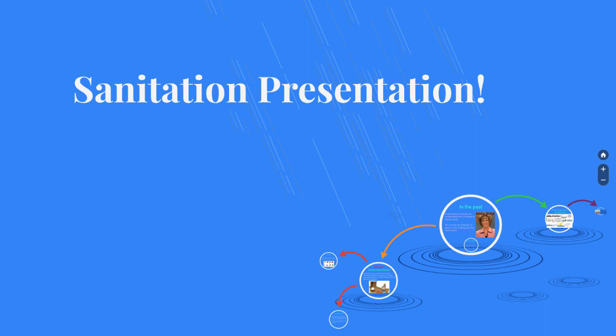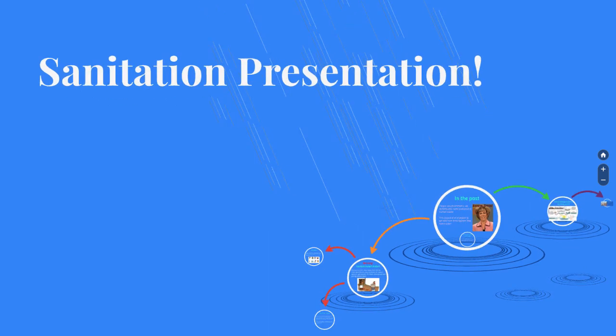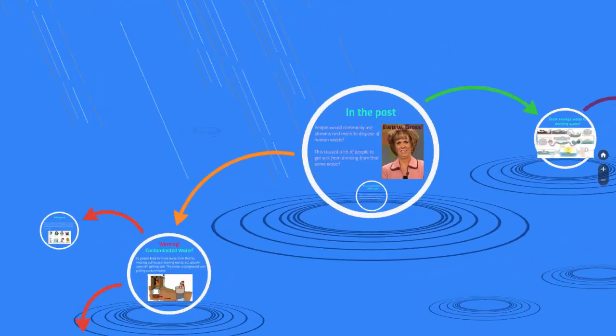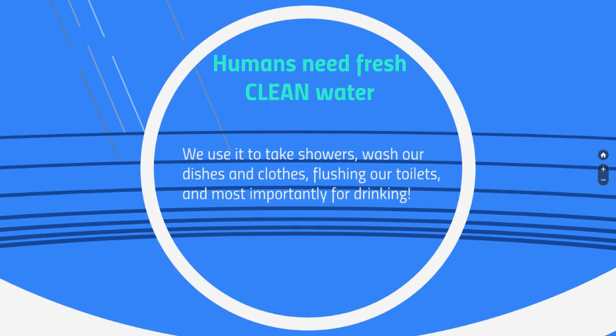We're going to look at water and how we use it domestically, with an emphasis on sanitation. We all know that humans need fresh, clean water. We use water for a lot of things — we talked about how we use it for agriculture and industry, like farming, making goods, and making electricity, but we also just need it for ourselves. So we're going to look at domestic use today.